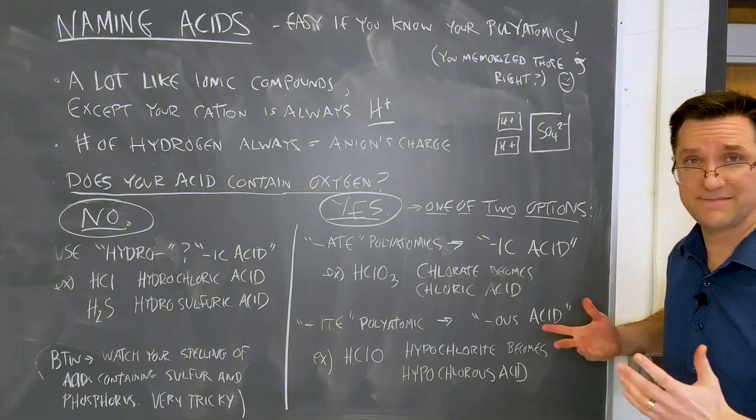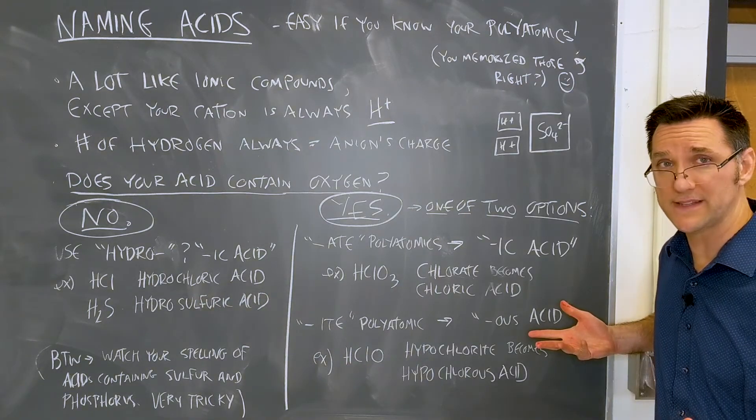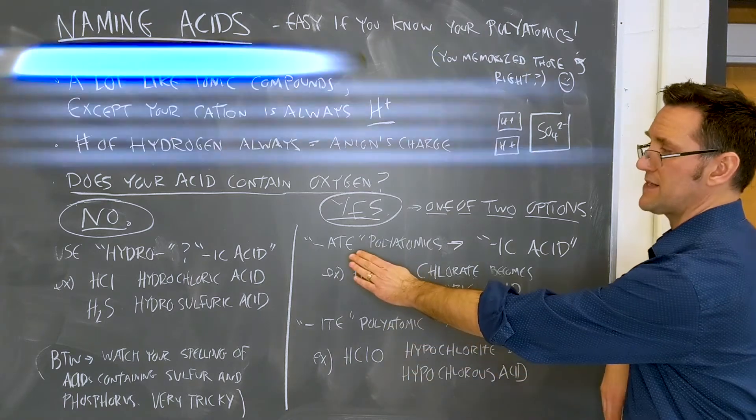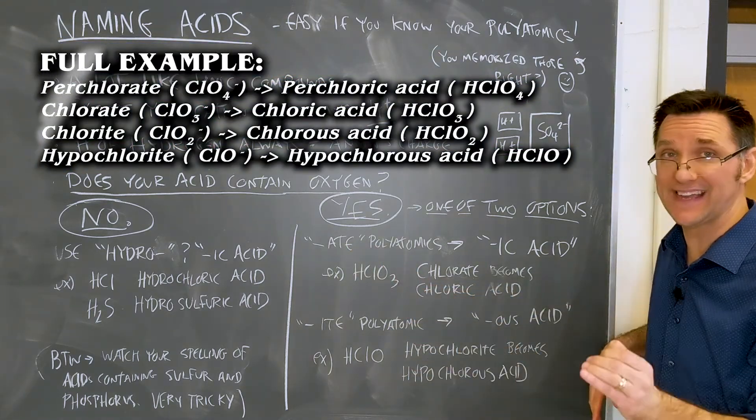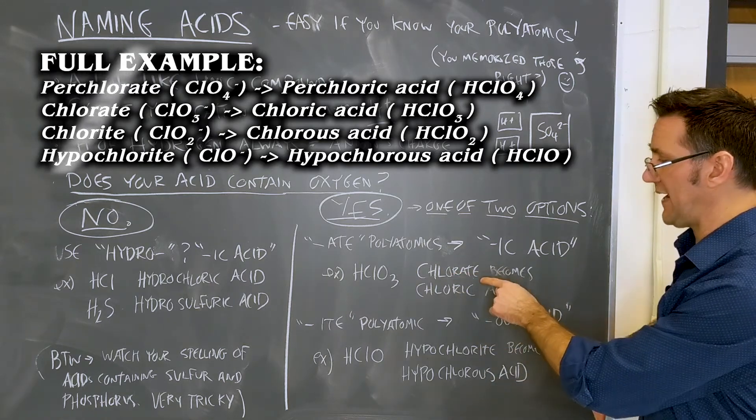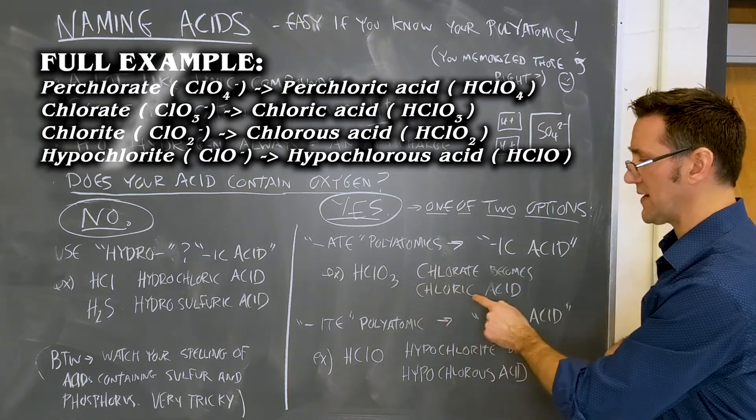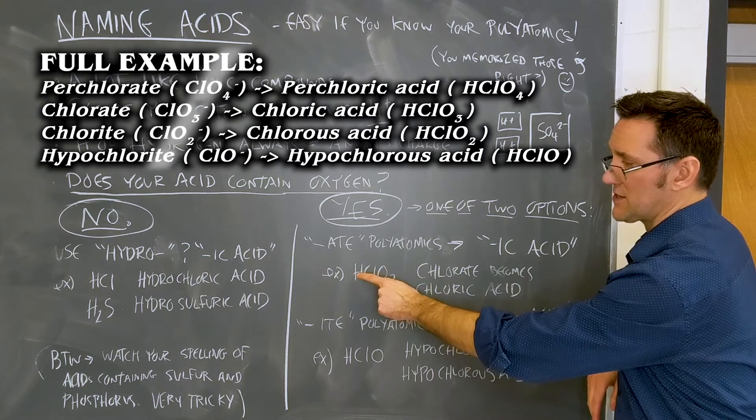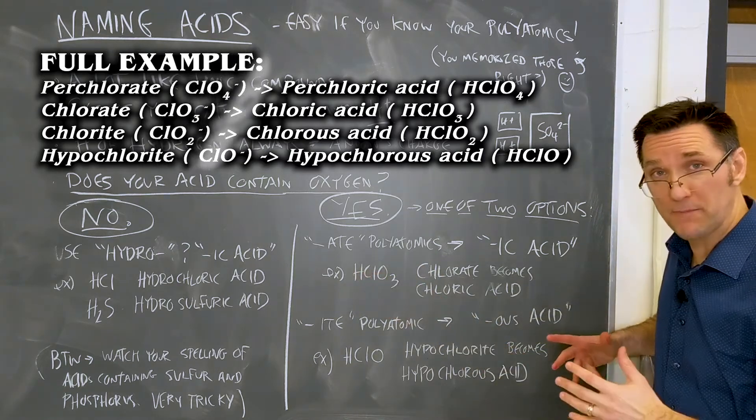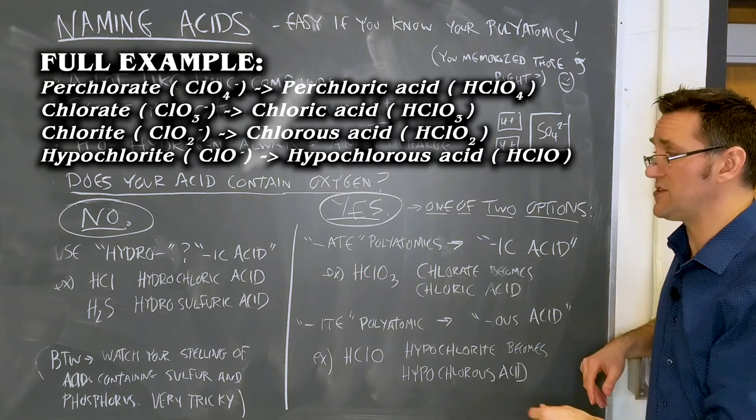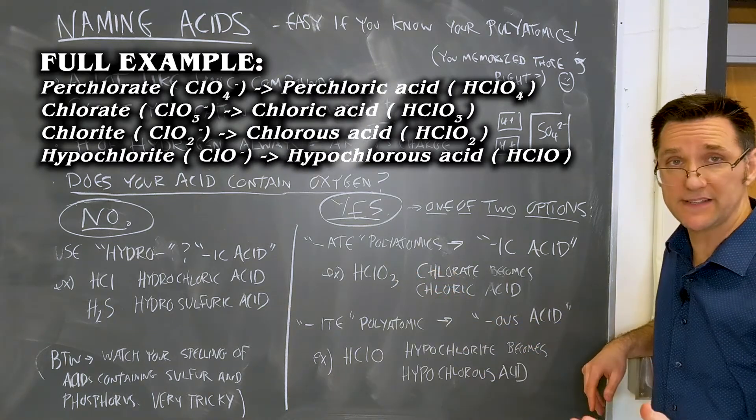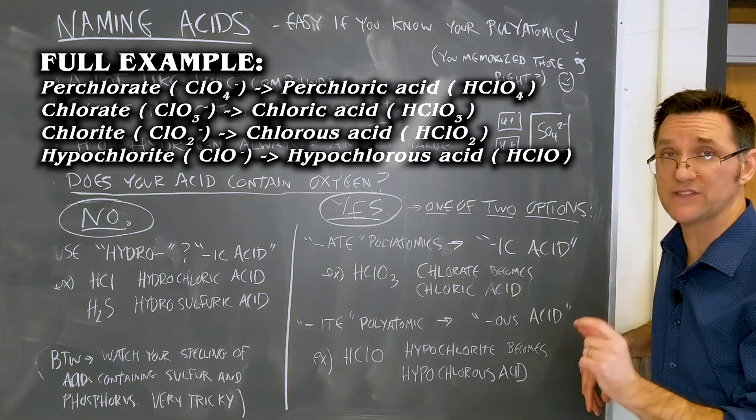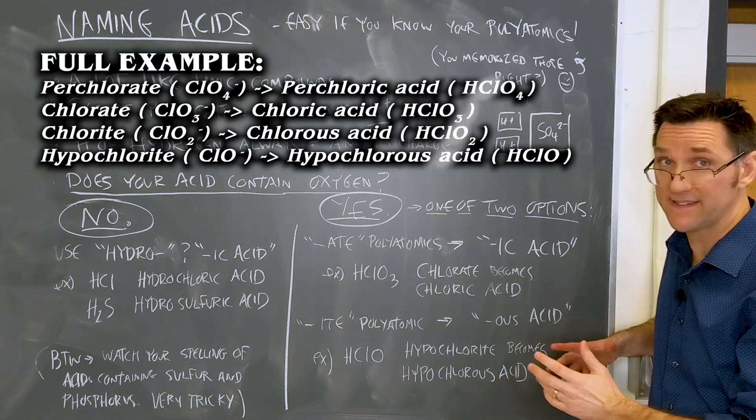If your acid does contain oxygen, this just reflects on the polyatomic it came from. If your polyatomic contained -ate, then all you do is you change the suffix to -ic acid. So chlorate becomes chloric acid. That negative 1 charge needed 1 hydrogen. Even if it was perchloric acid, it would just be HClO4. Nothing changes about the prefixes, just the suffix changes to -ic acid.